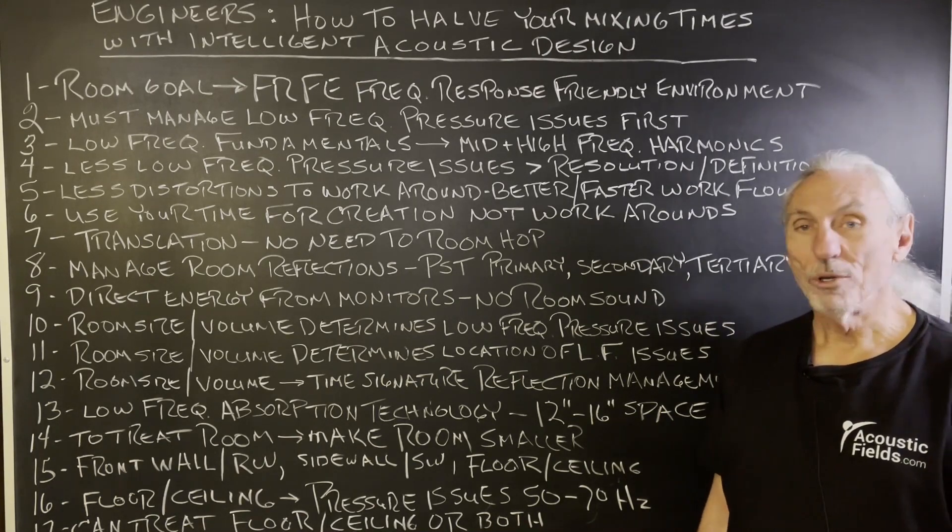Low frequency fundamentals produce middle and high frequency harmonics — they're all related. It's all one big extended family, starting with the nuclear family, which are the low frequencies: the 30s, the 40s, the 50s, the 60s. Those are the problematic areas we have to deal with, and 99% of rooms we see can't handle that energy.